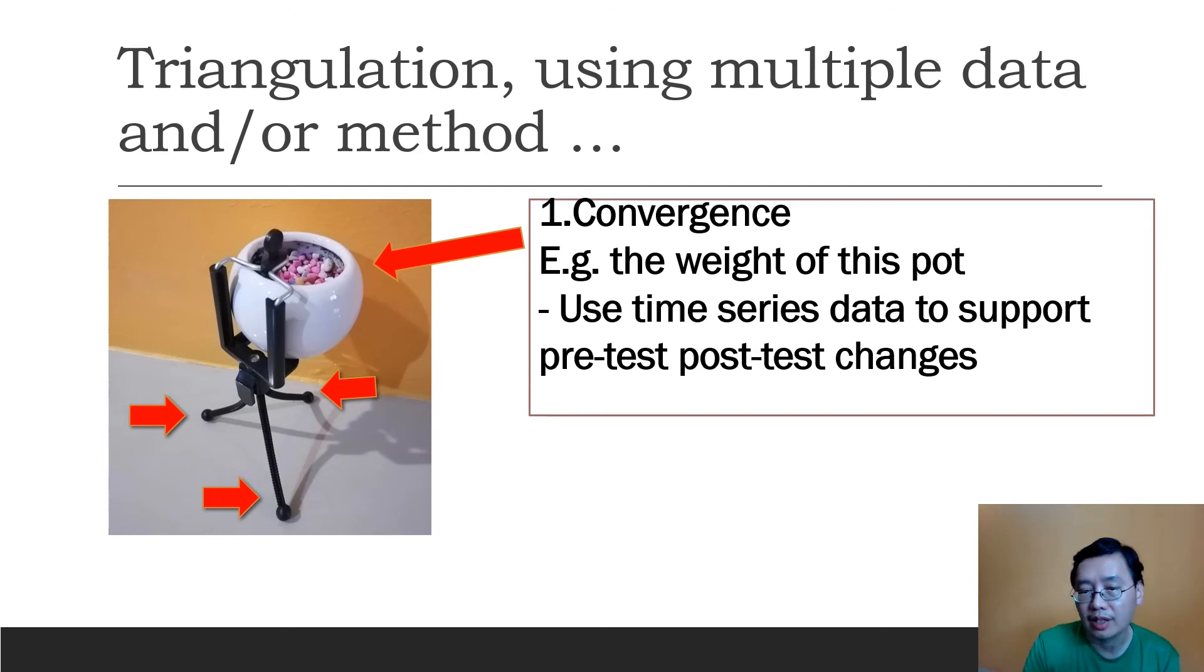Based on the research I did in 2016, I used time series data to support the changes in pre-test and post-test scores. This is shared in one of the videos on my channel about causality, how to improve causality of quasi-experimental research. I encourage you to watch that video.